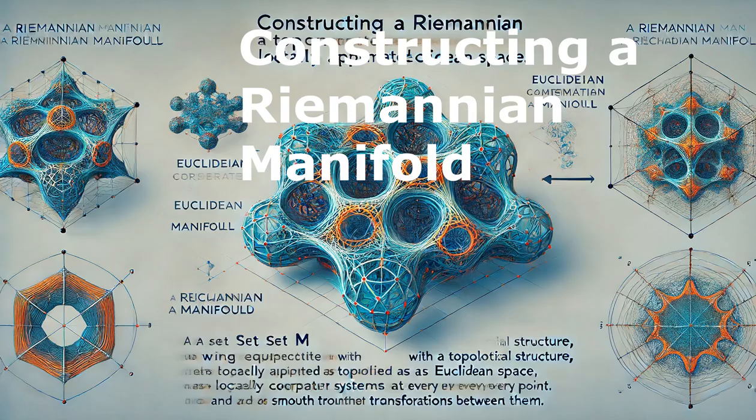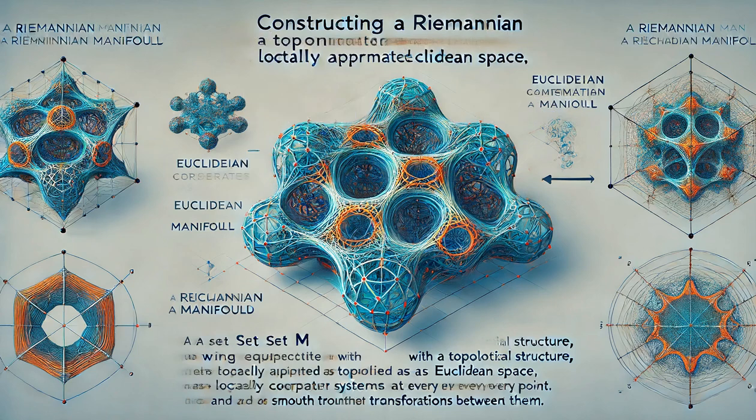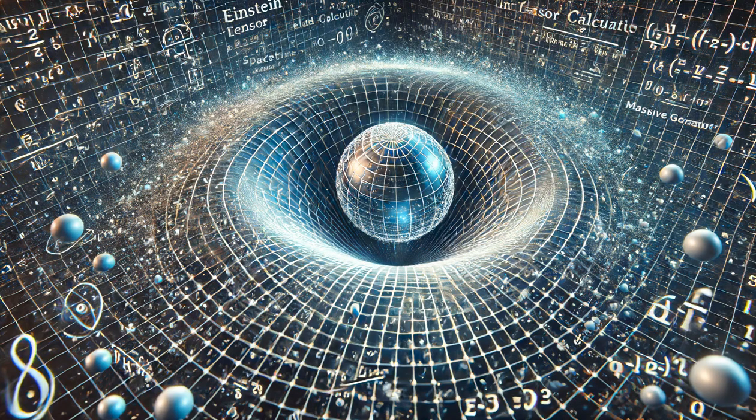Constructing a Riemannian Manifold. Consider a set M and equip it with a topological structure, then approximate it locally as a Euclidean space so that M becomes a manifold. We can transform this manifold into a Riemannian manifold by defining a connection and a metric on it.